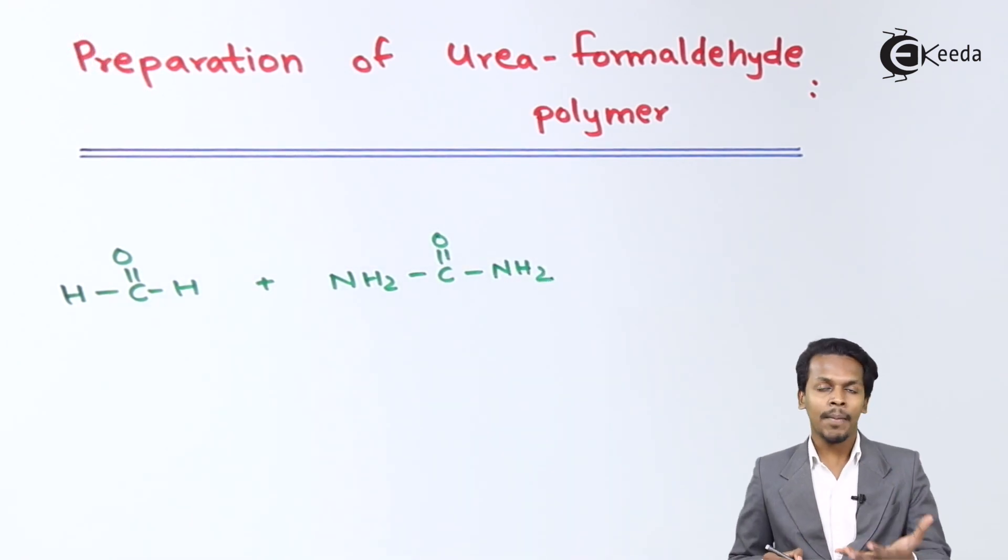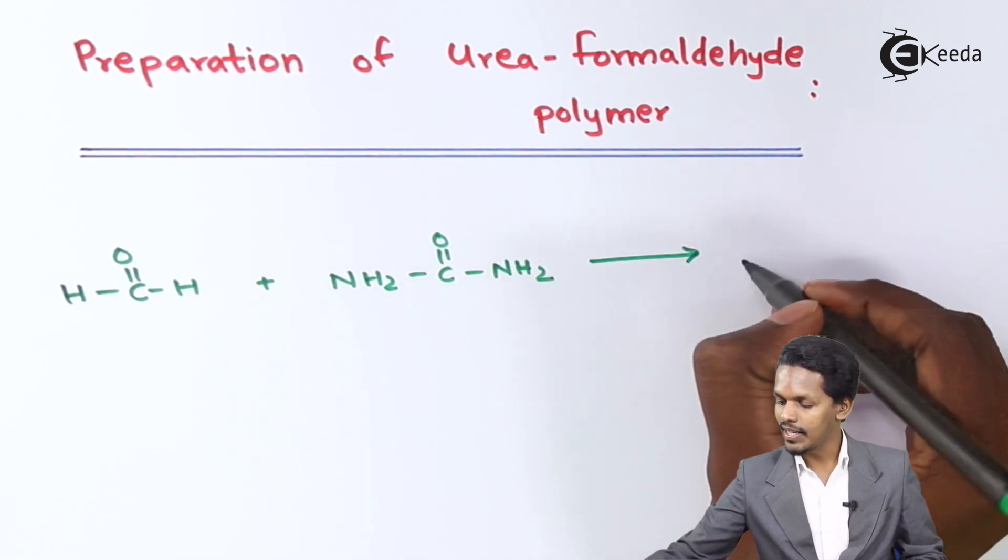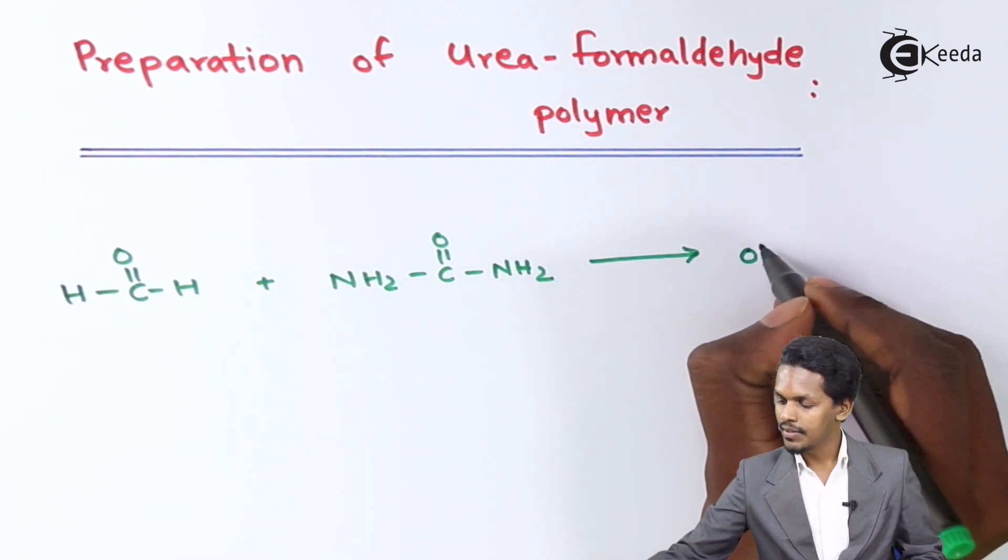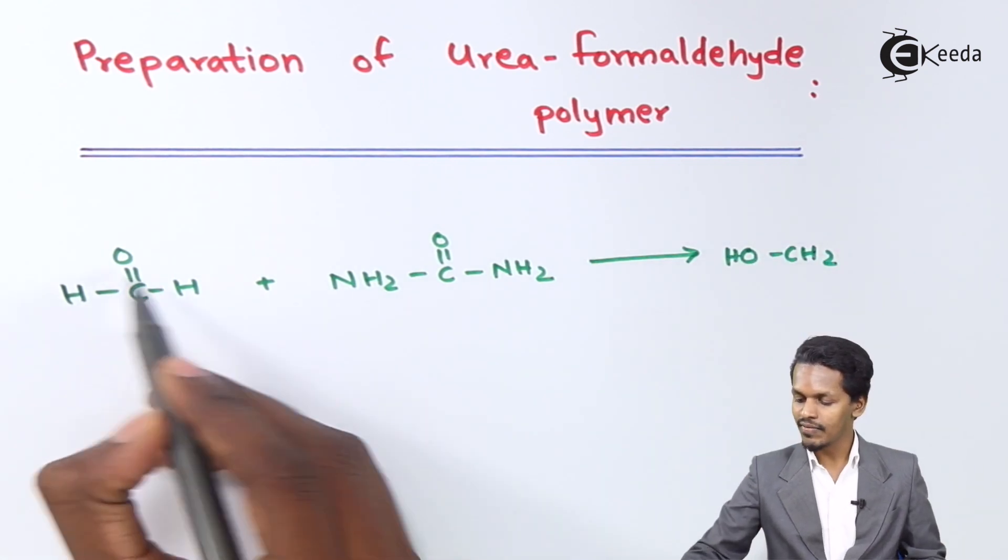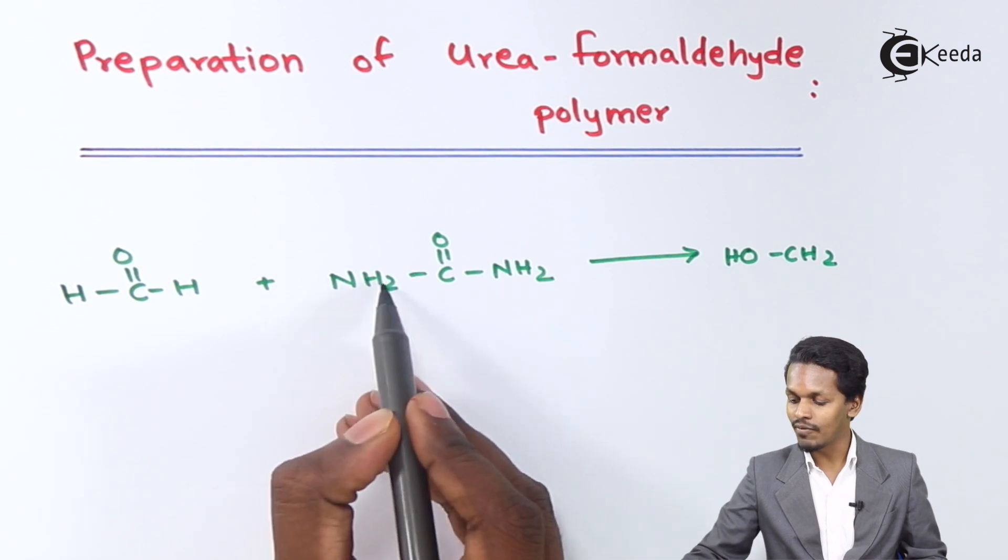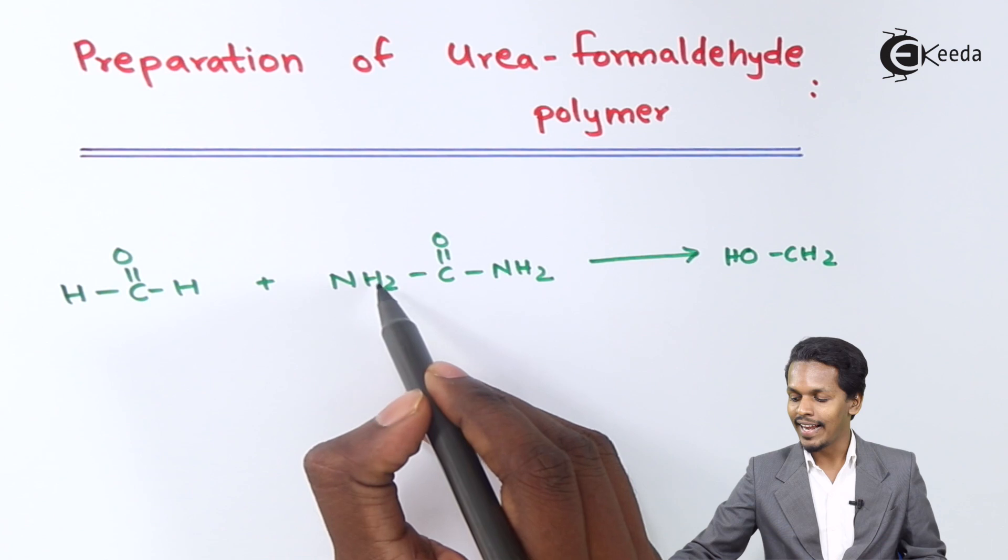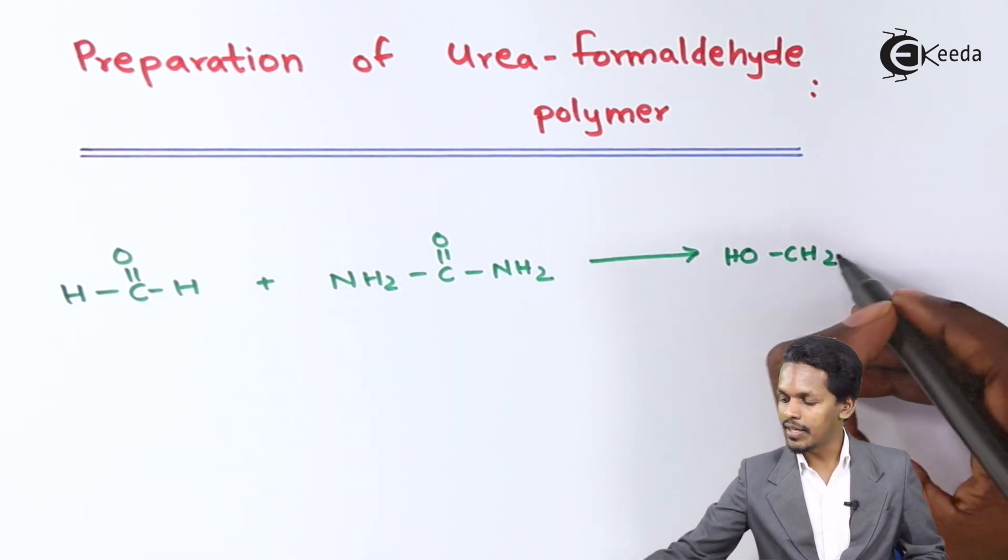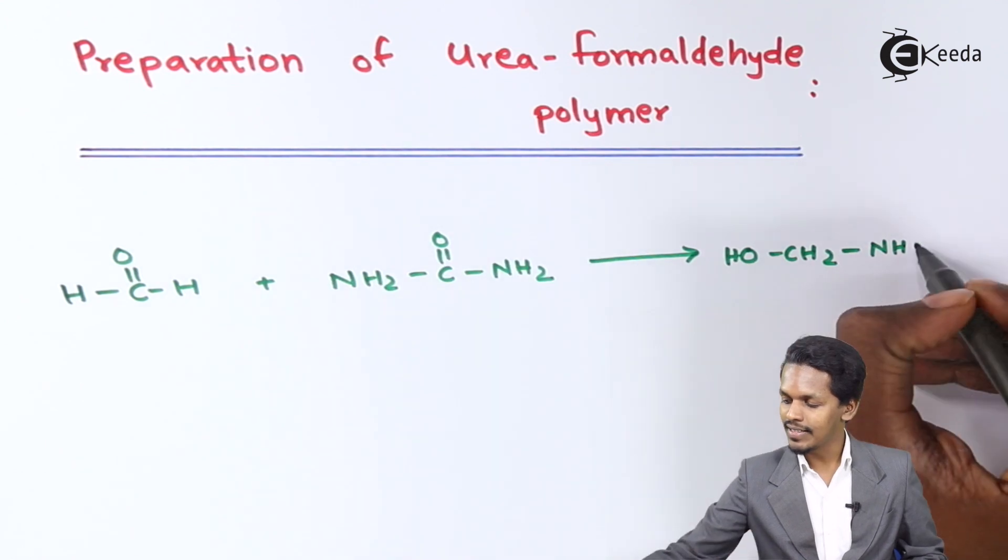So in this case, the compound that has been formed is nothing but I would write it over here as OH-CH2, because this one will turn into CH2 and one of the H will transfer on this oxygen atom. So therefore this will become OH, and now this NH2 will become NH, and this will be as it is, that is C double bond O-NH2.